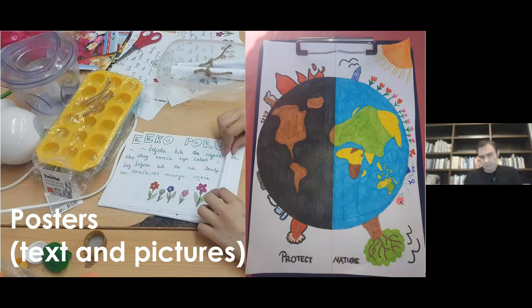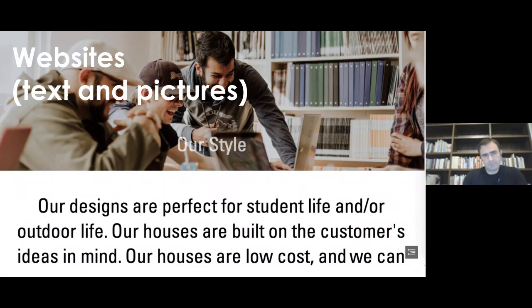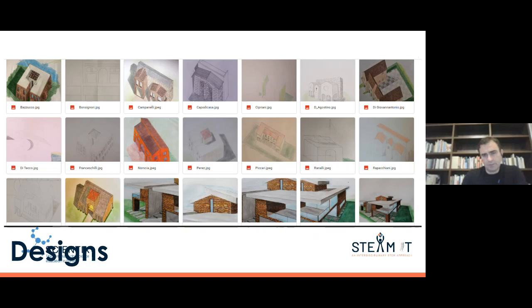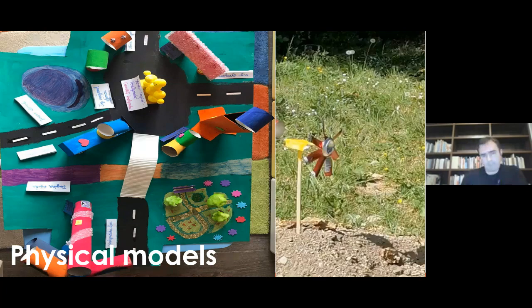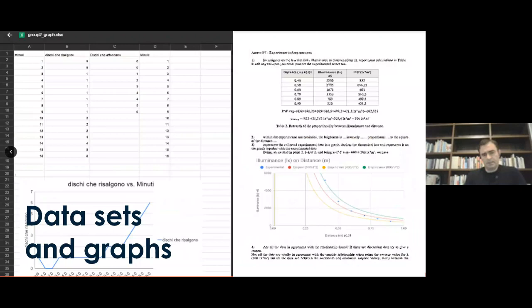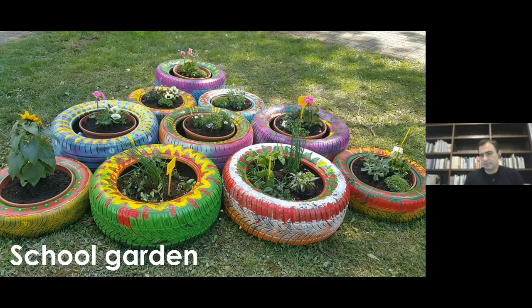We can have learning products of different scales. Small-scale learning products are what we have seen so far. However, in project-based learning, we can have larger-scale learning products such as posters with text and pictures, or websites created by students — examples from STEAMIT implementations. We can have different forms of design, either paper-and-pencil or digital. Physical models of various kinds, such as a model of a house, a city, or a windmill, are also possible. Of course, data sets and graphs are included, and a good example of a large-scale learning product is a school garden, provided it is integrated into learning activity sequences.